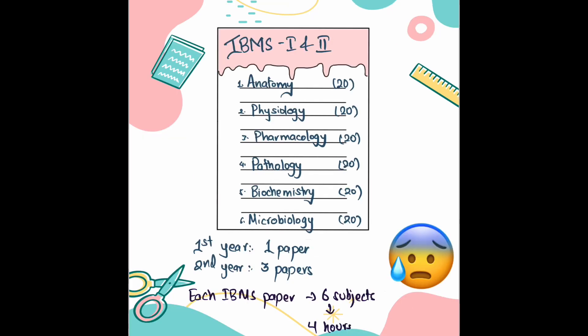Now, IBMS — Integrated Basic Medical Science — runs through both first year and second year. In IBMS, you will have six subjects: Anatomy, Physiology, Pharmacology, Pathology, Biochemistry, and Microbiology. IBMS is integrated, meaning subjects are dealt with in a system-wise manner. Each IBMS paper comprises all six subjects, which you will have to complete in four hours.